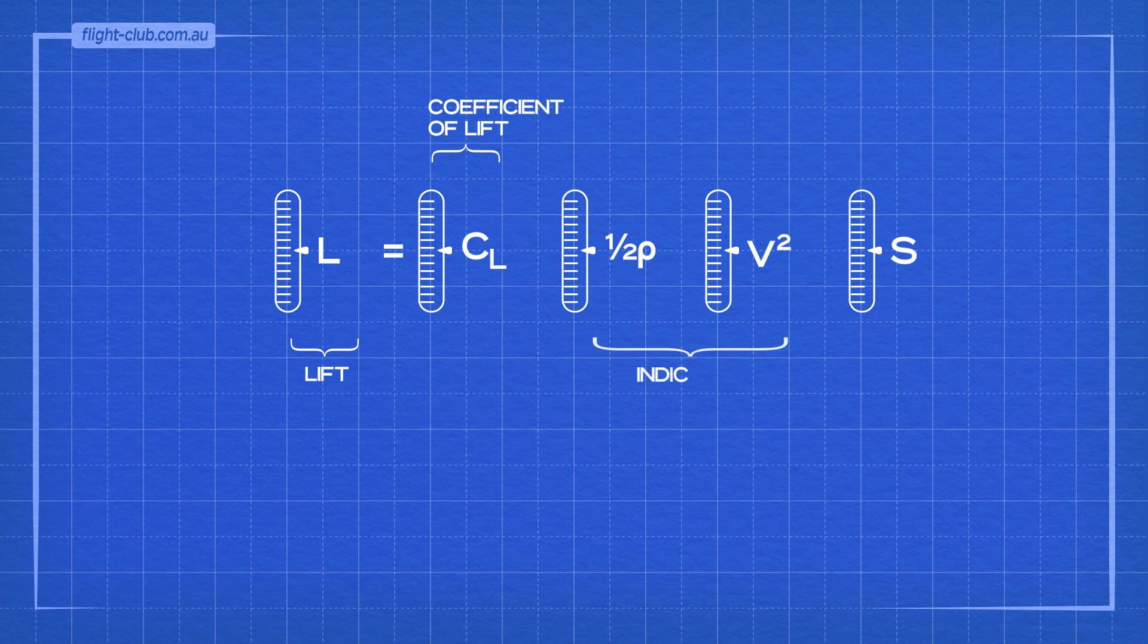Half rho v squared represents the kinetic energy of the relative airflow. This also represents the indicated airspeed, which is the speed pilots read when they look at the airspeed indicator in the cockpit.